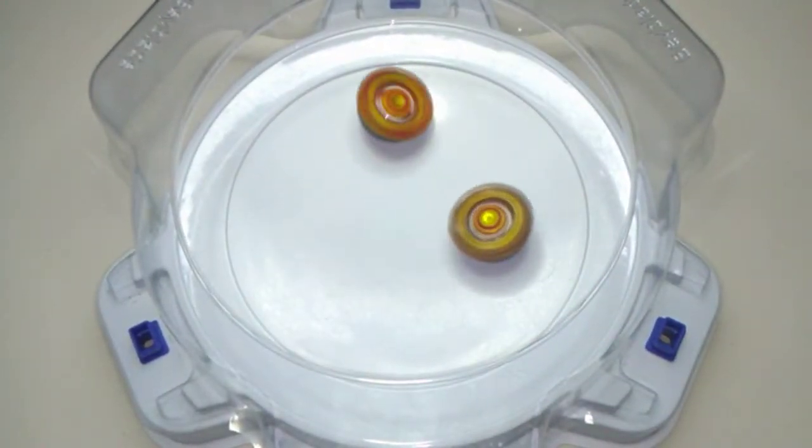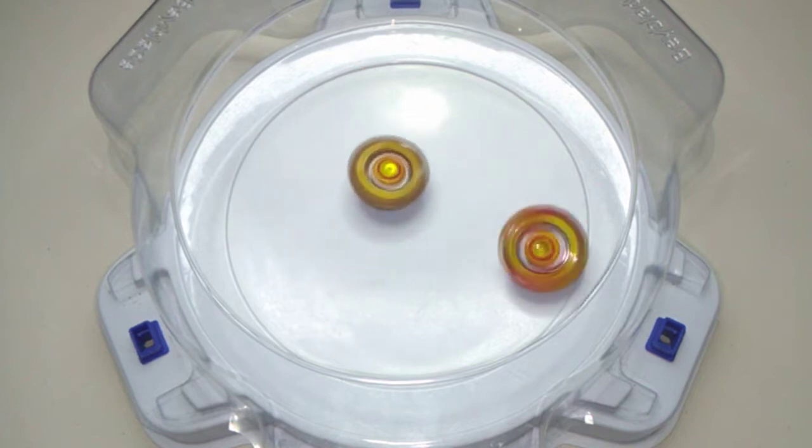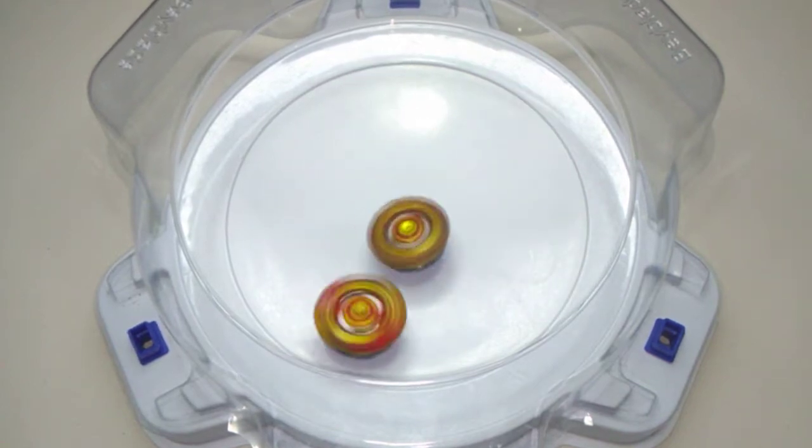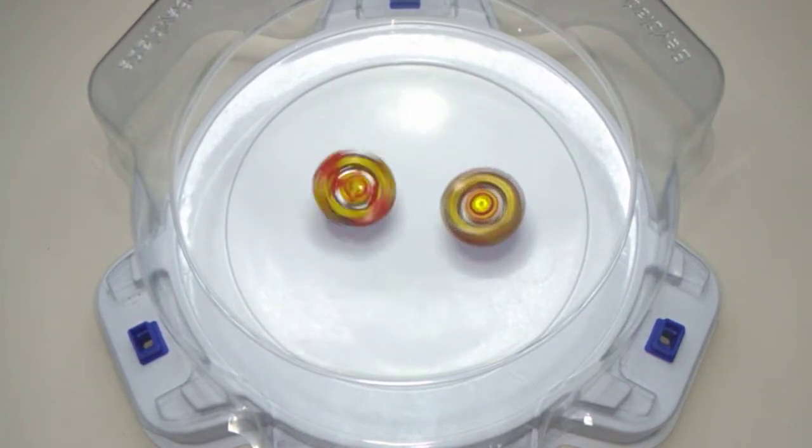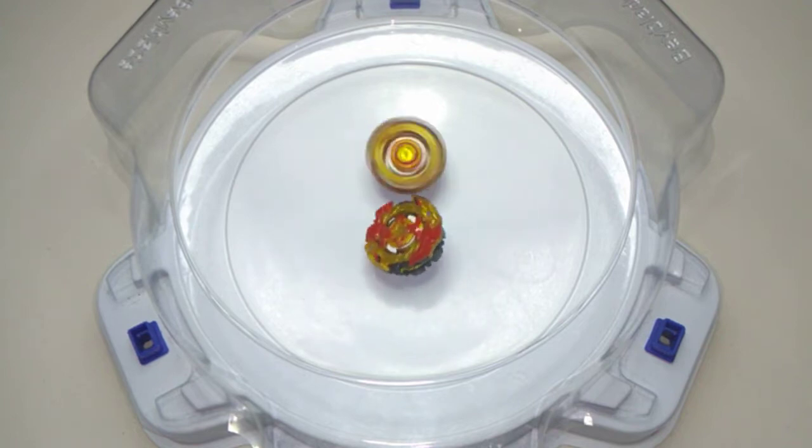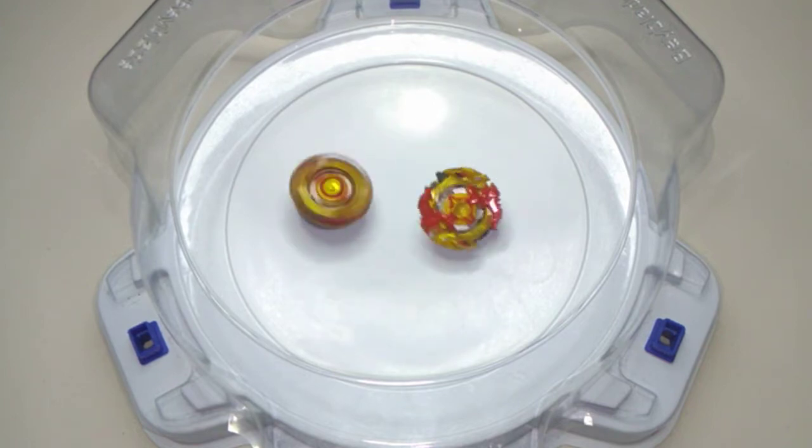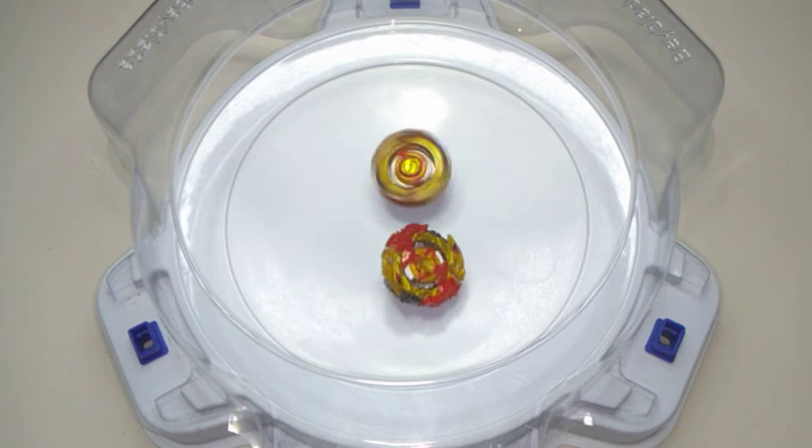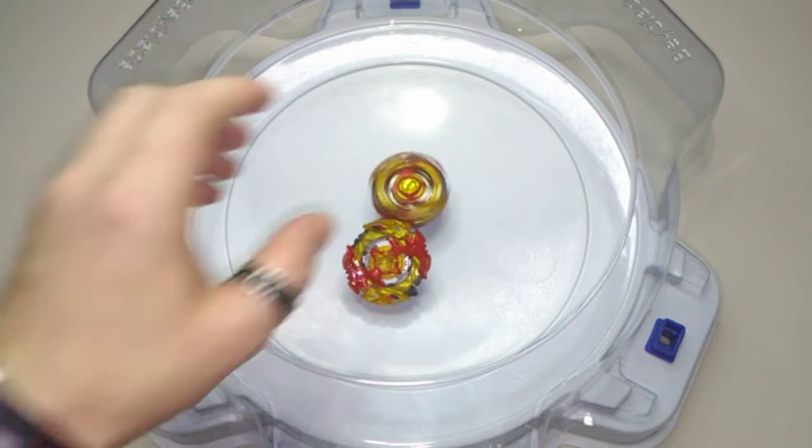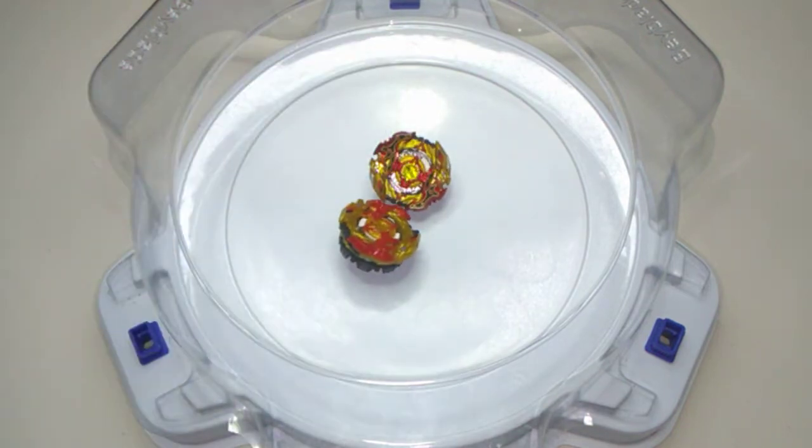Back and forth there, almost getting pushed out of the stadium was Cho-Z Spriggan, Turbo Sprizen slowing right down, and picking up yet another Survivor victory, settled down there, Cho-Z Spriggan.